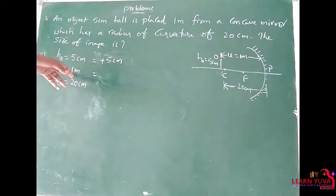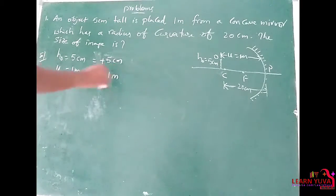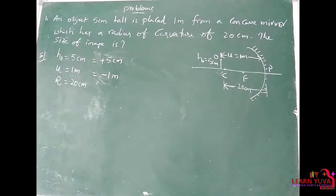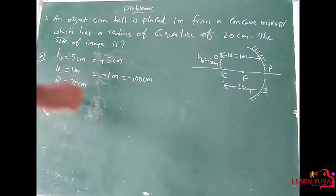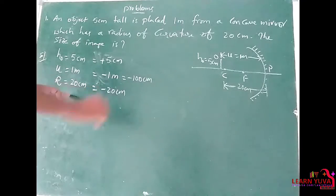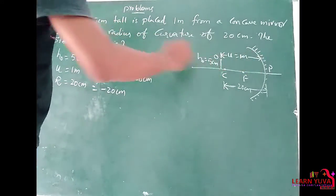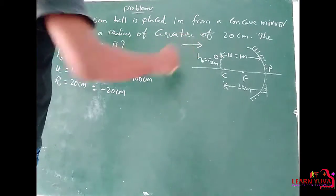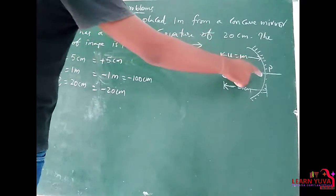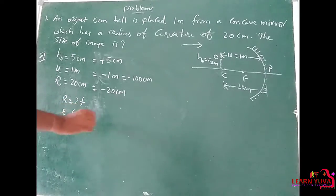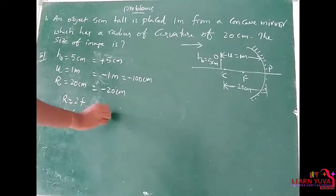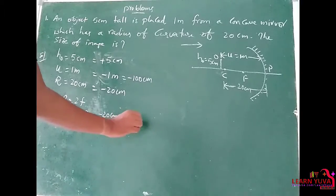Object distance U is equal to minus 1 meter because U value should be taken as negative. Converting to centimeters, that is minus 100 cm. R is equal to minus 20 cm because R is in front of the concave mirror. By the relation R equals 2F, F equals R by 2, that is minus 20 cm by 2, which equals minus 10 cm.